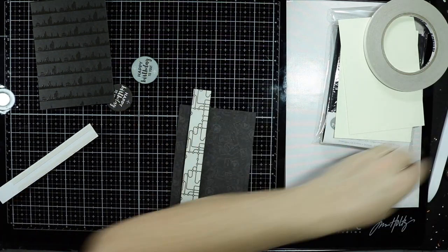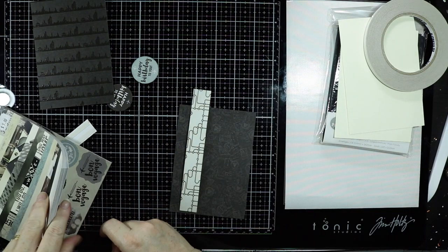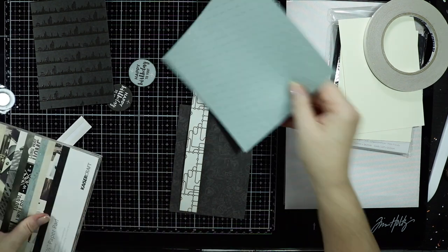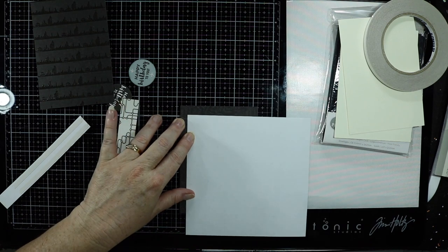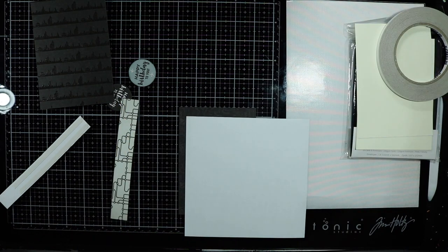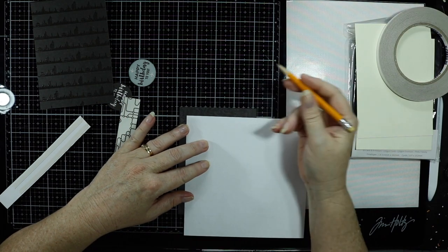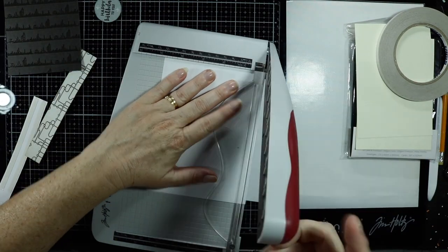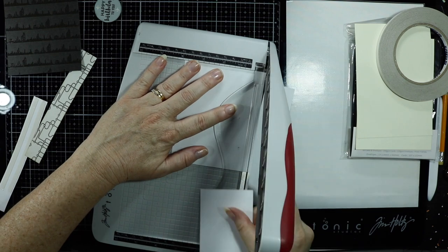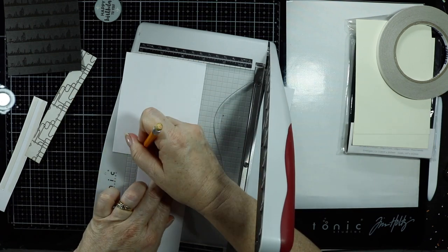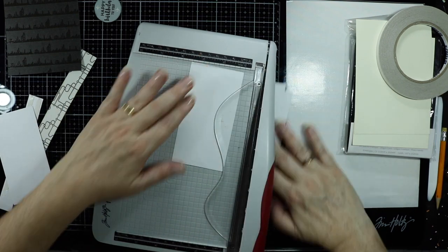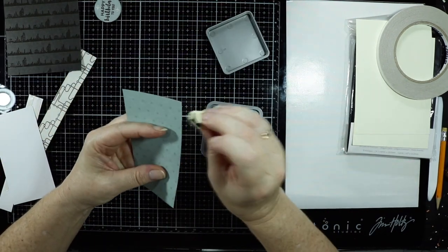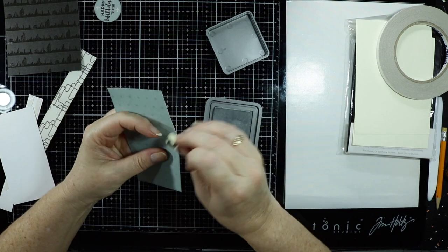So I've gone back to the paper pack and I want a contrasting piece here. I'm not going to mount it on a different colored background, but I'm going to use this as a contrasting piece, just to fill up a bit more of the front of the page. So once again just going around the edge with the iced spruce just to get rid of that white core of the paper.